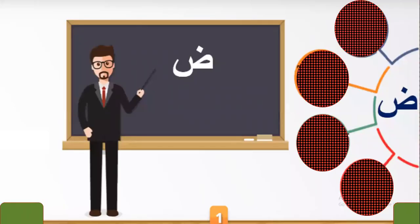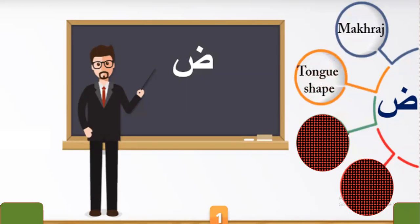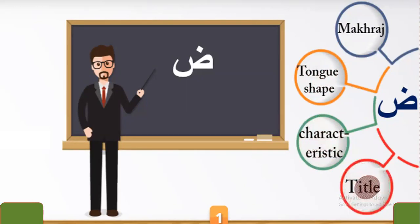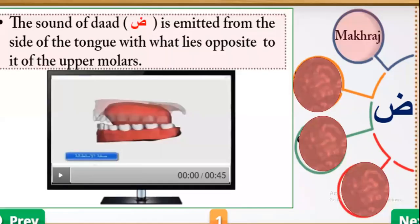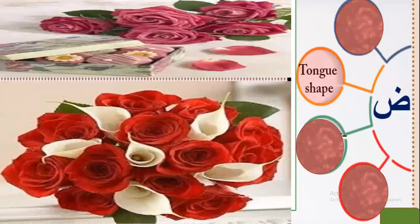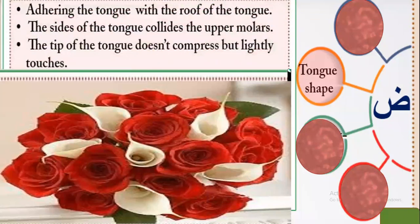Today inshallah we will study together four points about letter Dad: the makharaj, the shape of the tongue, adhering the tongue, and adhering the tongue with the roof of the mouth. The sides of the tongue touch the upper molars, and the tip of the tongue doesn't compress but lightly touches.